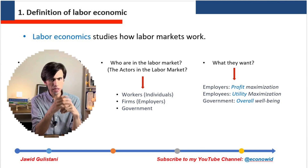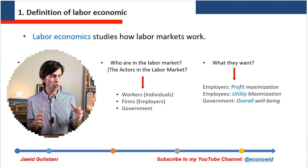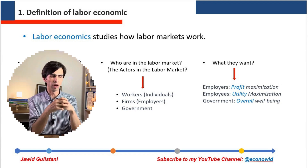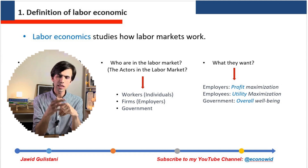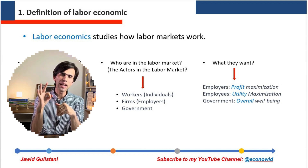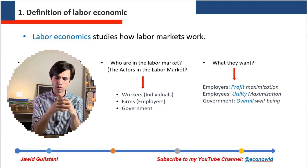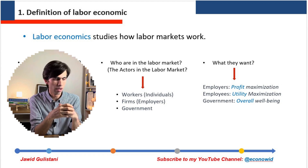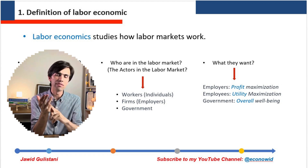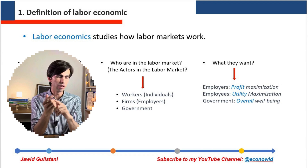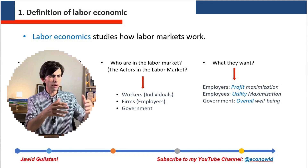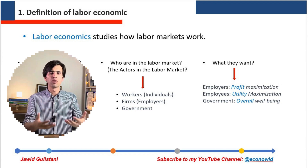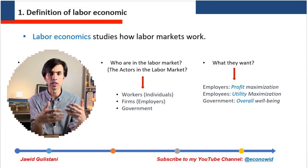Now let's look at who the main actors in the labor market are. There are three main actors: workers (individuals), firms (employers), and government. Let's talk about each one — why they are involved in the labor market, what they want, and what they do.